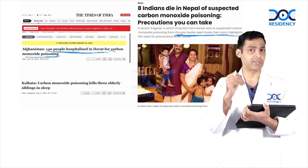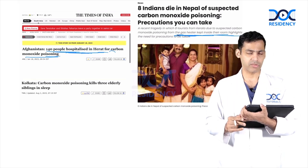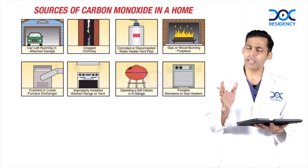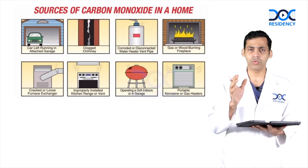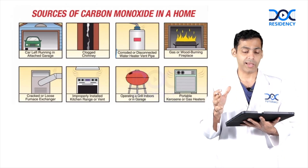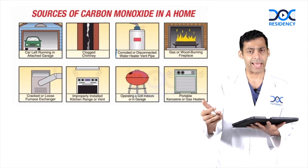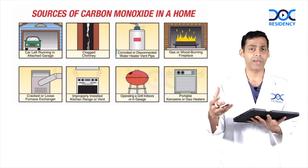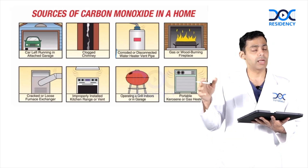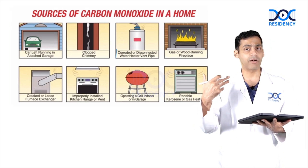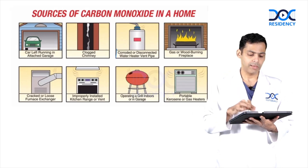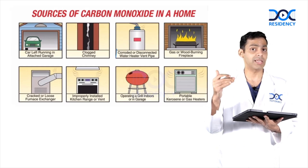Those were the two instances of carbon monoxide poisoning I faced. I'm sure all of you will encounter more. So keep an eye out for carbon monoxide poisoning. The most important thing is to identify the setting in which the patient was exposed. Sources of carbon monoxide in a home include a car left running in an attached garage — someone inebriated with alcohol might dose off inside the car leaving the engine running, and the exhaust accumulates CO. A clogged chimney can also cause carbon monoxide poisoning inside the house.